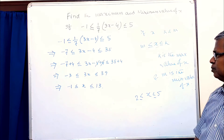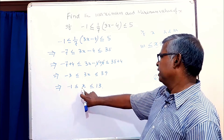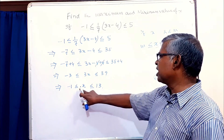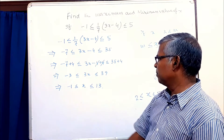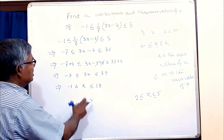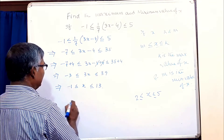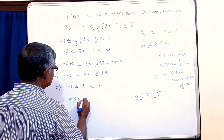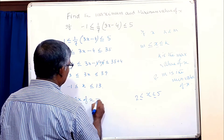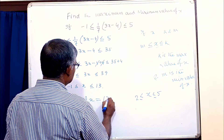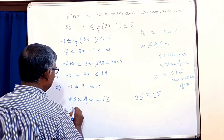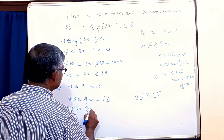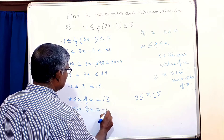Similarly, here we see x is less than or equal to 13 and greater than or equal to minus 1. So from this relation, we can write: maximum value of x equals 13 and minimum value of x equals minus 1.